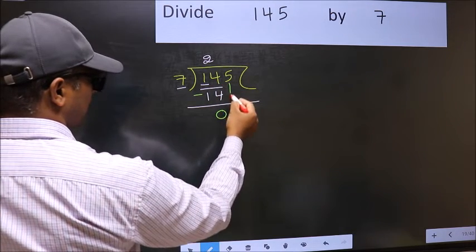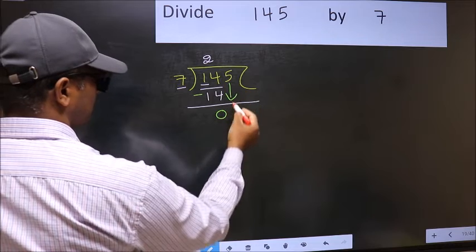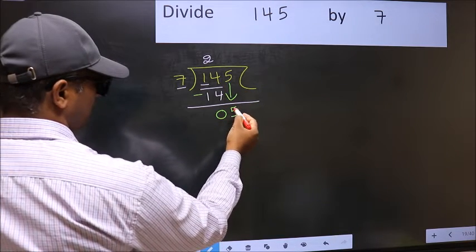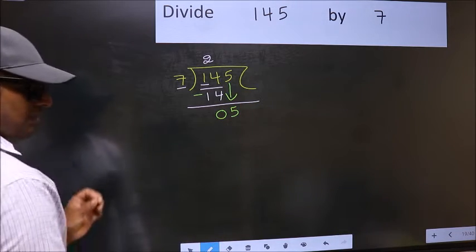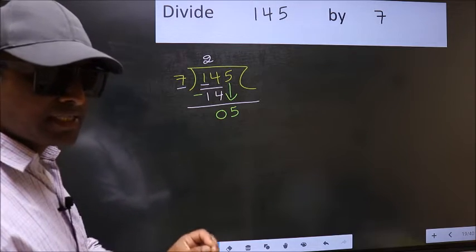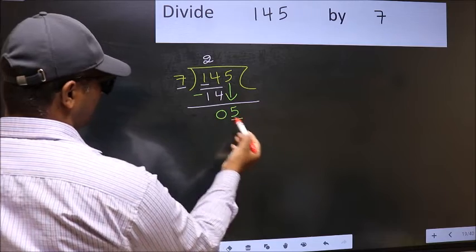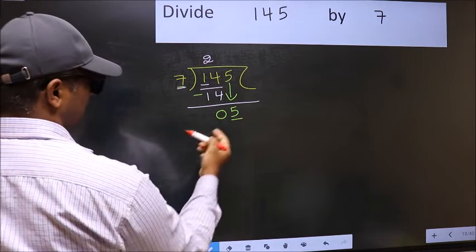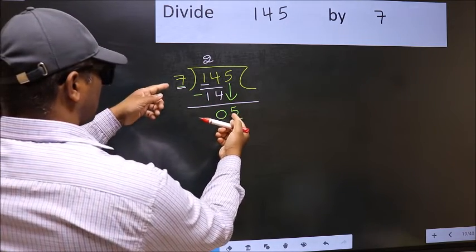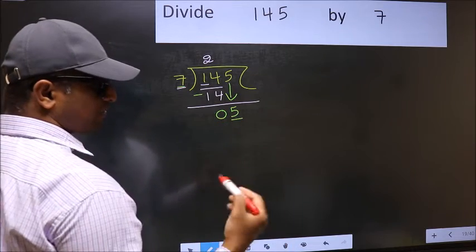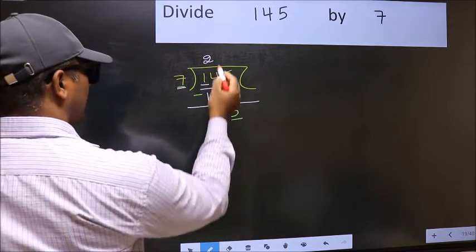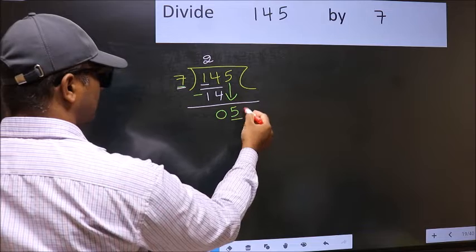After this, bring down the next number. So, 5 down. After this step, the mistake happens. And the mistake is this: here we have 5 and here 7. 5 is smaller than 7. So what many do is they directly put dot and take 0.